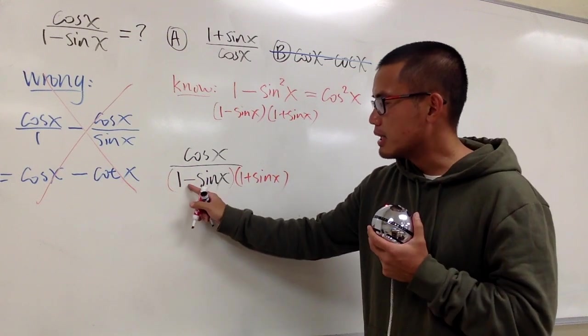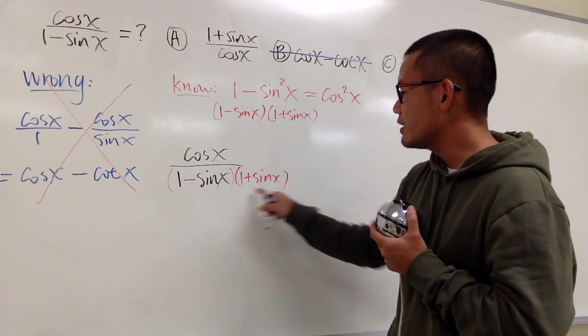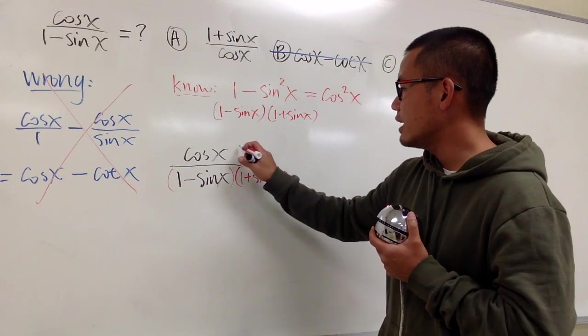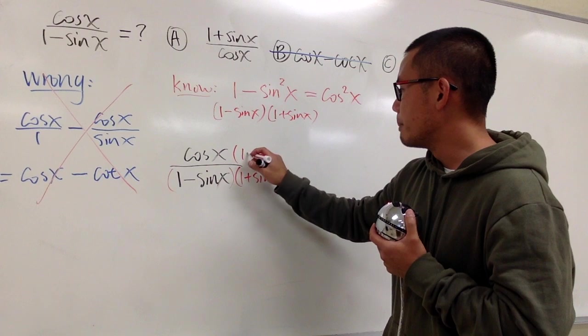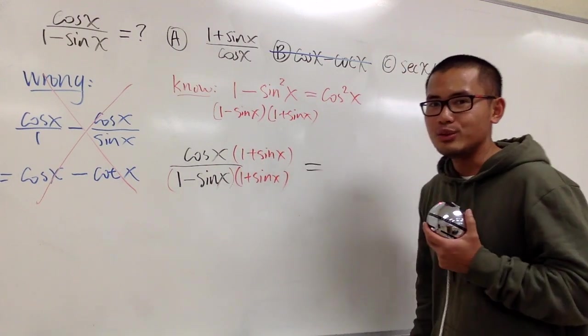You can imagine, if this was a plus, we'll change this to a minus. Anyways, I'll just multiply the bottom by this, and also do the same on the top. 1 plus sine x, like that. And we'll continue from here.